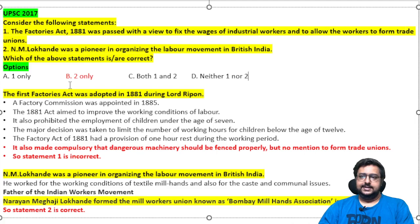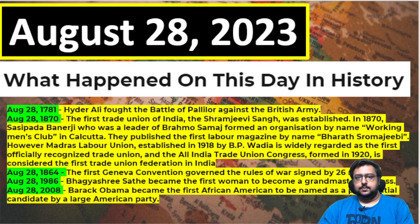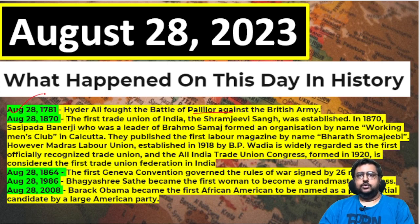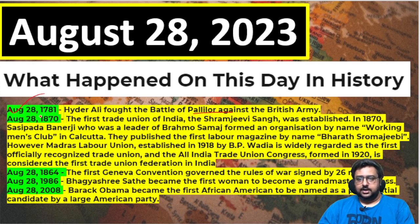Today — August 28 — has significance related to the labor movement and trade unions. The first important event: Hyder Ali fought the Battle of Pollilur against the British Army on this date in 1781. After that, back-to-back Anglo-Mysore Wars followed, and by around 1799 Tipu Sultan died and the Fourth Anglo-Mysore War concluded.